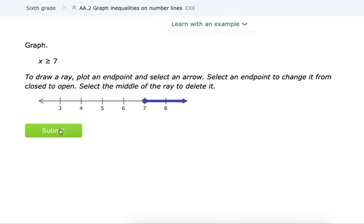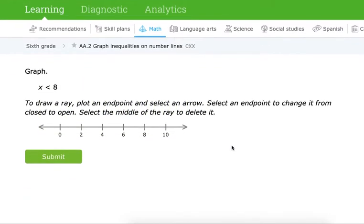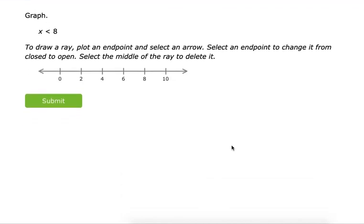Let's submit this one and go ahead and try one more. So this one, again, we have X is less than 8. So, again, we pick our boundary point.